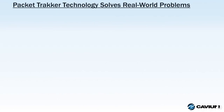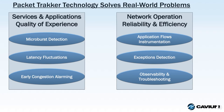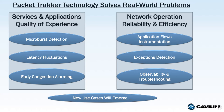Packet Tracker is a technology looking to solve these real-world problems. Services and applications want to understand and improve the quality of experience, which is affected by issues such as microbursts, latency fluctuations, and congestion. Network operation, reliability, and efficiency also require application flow instrumentation, the ability to detect exceptions, and troubleshooting via observation points. Over time, new use cases will emerge, so it's important that the telemetry tool supports new protocols, new capabilities, and deeper forensic analysis.